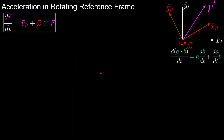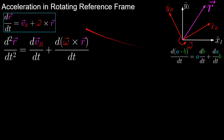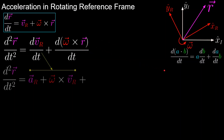Now that we have the first derivative, we can move on to the second derivative. We start by taking the derivative of both sides of this equation, so we have that the second derivative is equal to the derivative of the velocity as seen in the rotating frame, plus the derivative of the omega cross r term. We start with the derivative of velocity — it is equivalent to the first derivative we did, except we replaced position with the velocity vector, so it's equal to the acceleration as seen in the rotating frame, plus omega cross v.